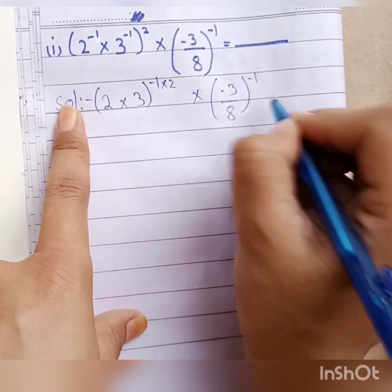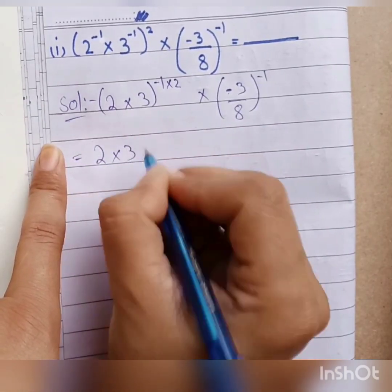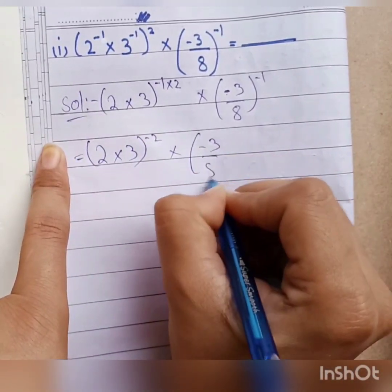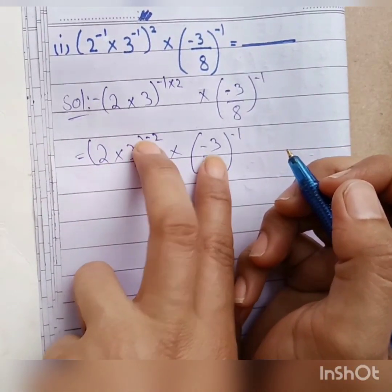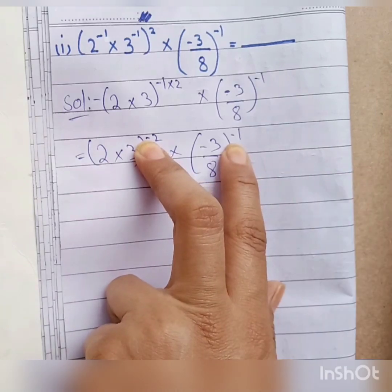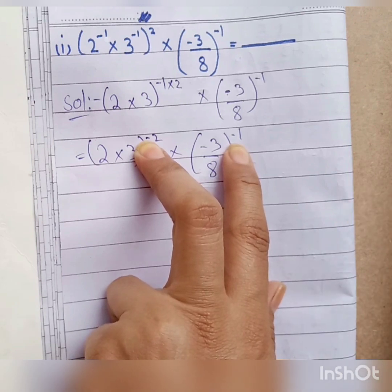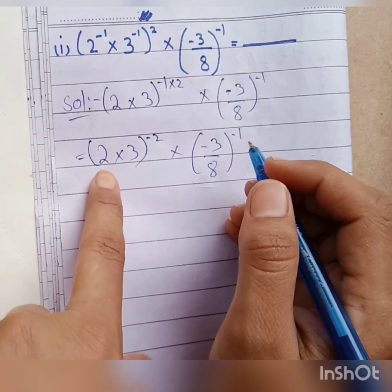What do we do with minus 1? The position of the numerator and denominator will change. When the position of the denominator changes, the power will be negative, which will become positive. The power will be positive. Now let's see — we change the power and multiply 2 and 3 to get 6.